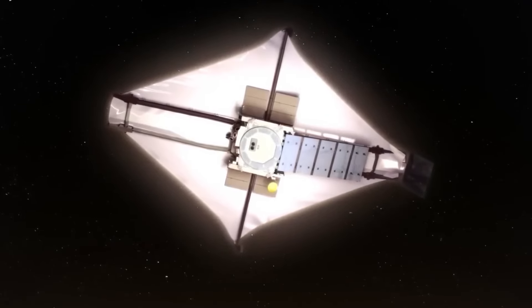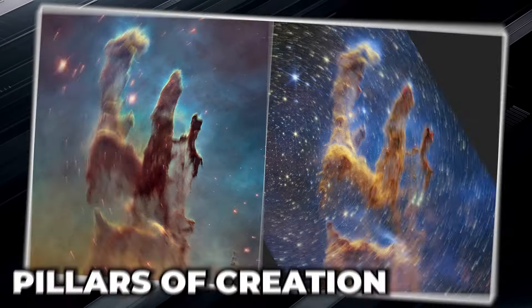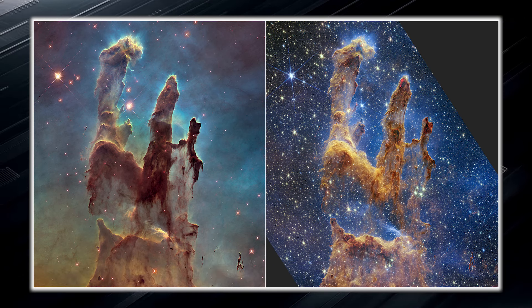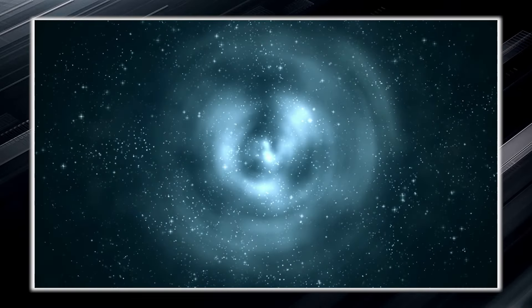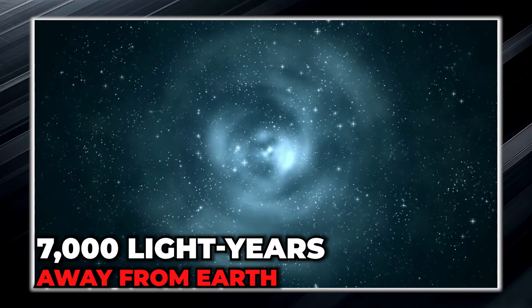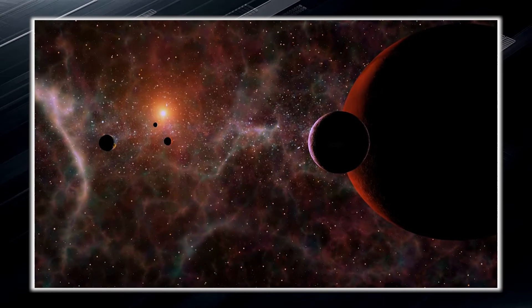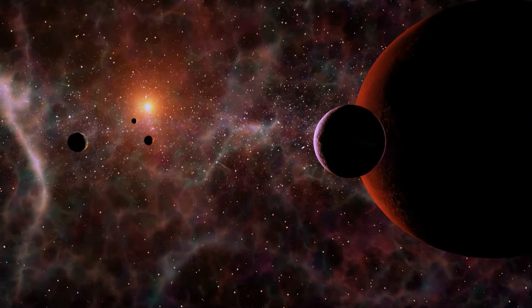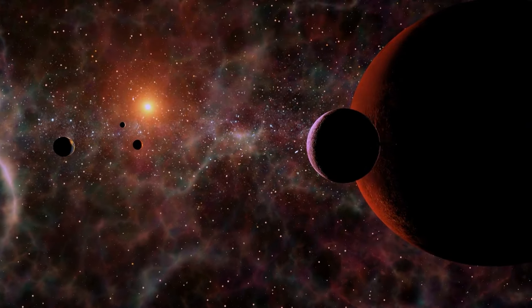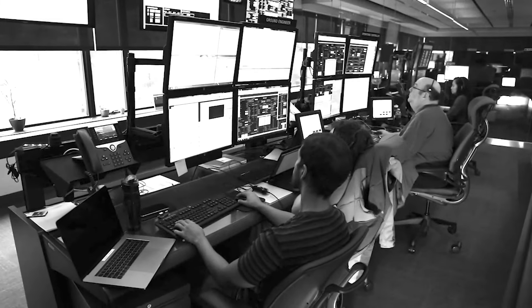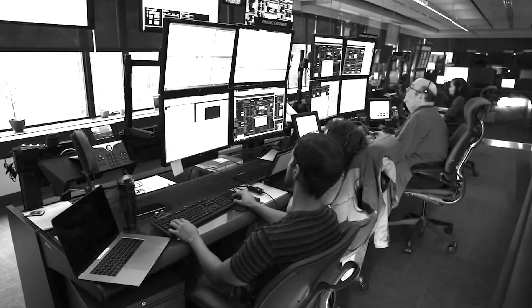When the James Webb turned its instruments toward the iconic pillars of creation, it captured the famous dust clouds in incredible detail. These pillars are located in the constellation Serpens, about 7,000 light years away from Earth. The pillars of creation are part of the Eagle Nebula, large clouds of gas and dust that was first photographed by the Hubble Space Telescope in 1995. Since then, the extraordinary beauty of the pillars has been revealed.